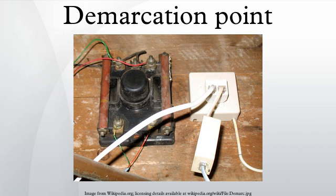In most cases, everything from the central office to and including the demarcation point is owned by the carrier, and everything past it is owned by the property owner. As the local loop becomes upgraded with fiber optic and coaxial cable technologies sometimes replacing the original unshielded twisted pair to the premises, the demarcation point has grown to incorporate the equipment necessary to interface the original premises wiring and equipment to the new communication channel. Demarcation points on houses built prior to the Bell System divestiture usually do not contain a test jack; they only contained a spark gap surge protector, a grounding post, and a mount point to connect a single telephone line.